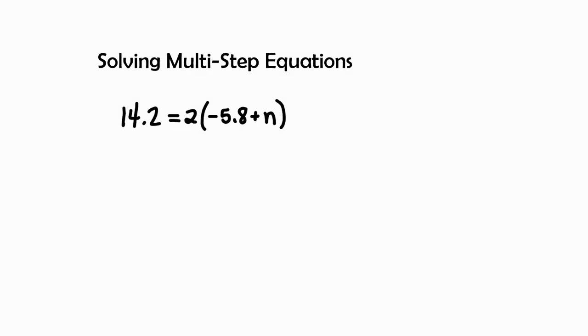In this video we will be learning how to solve multi-step equations. In this example we have 14.2 equals 2 times the quantity of negative 5.8 plus n. I see some distributive property and the variable on the right side instead of normally on the left side.